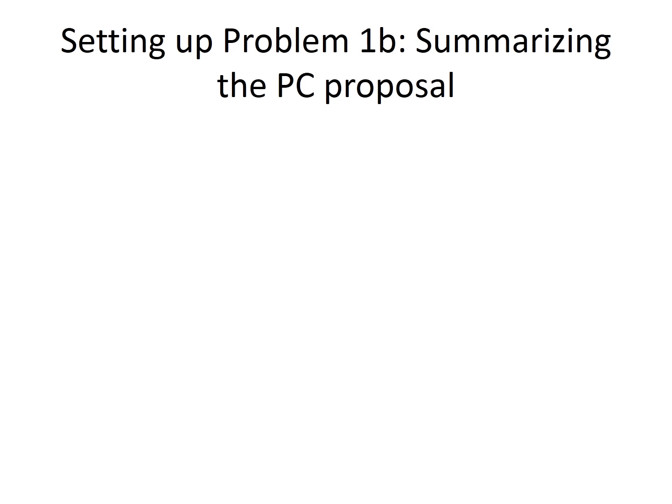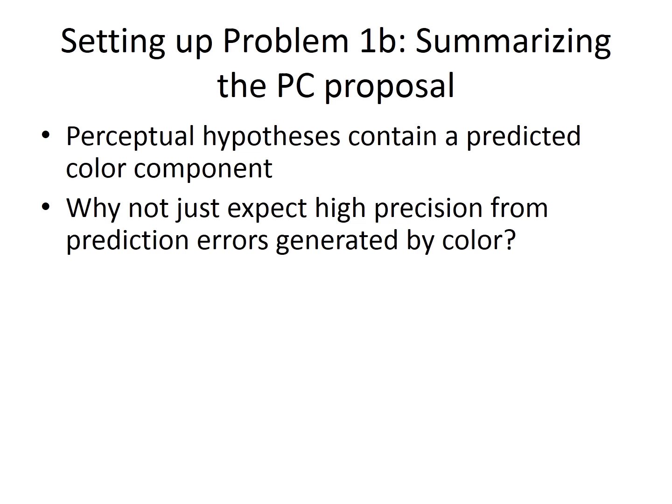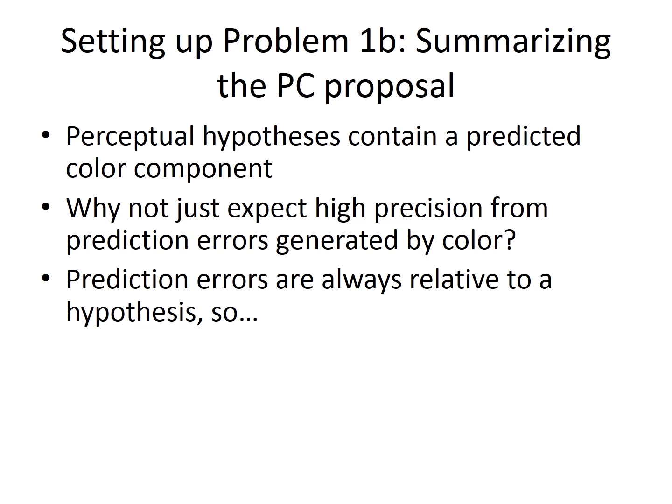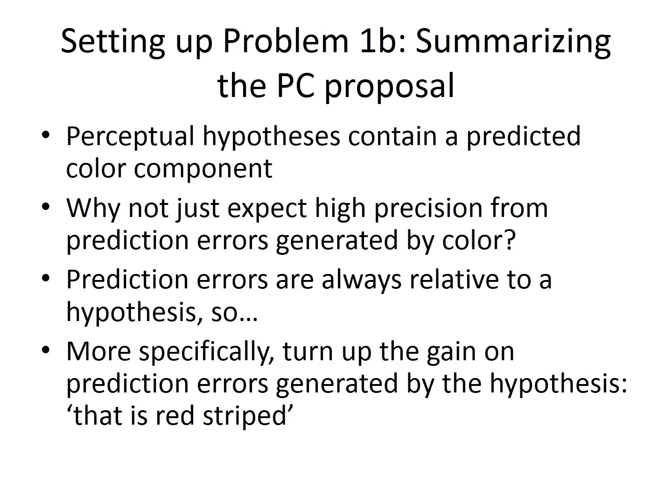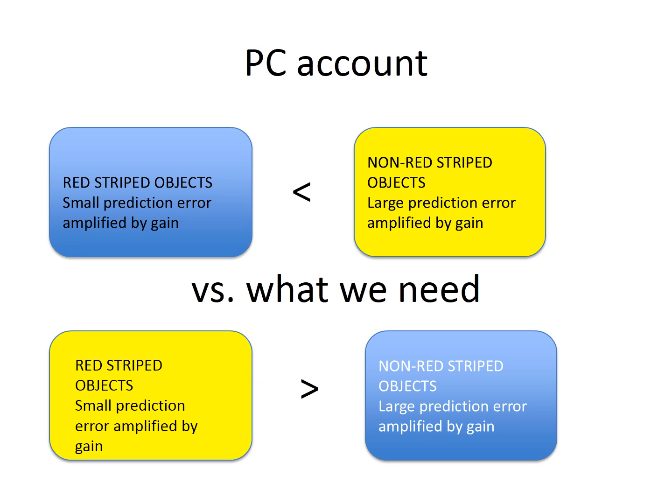To understand the second problem, let's go through the predictive coding proposal. Perceptual hypotheses contain a predicted color component. Why not just expect high precision from prediction errors generated by color? Prediction errors are always relative to a hypothesis. There's no such thing as free-floating prediction error. So, more specifically, let's turn up the gain on prediction errors generated by the hypothesis that is red striped. This would lead us to attend to the items that generate the largest prediction errors with respect to the hypothesis that is red striped. All the items that are not red and white striped. But this is the opposite of what occurs in endogenous feature-based attention. We attend to the red striped objects, not their opposite. So, there's something wrong with the theory as it stands.